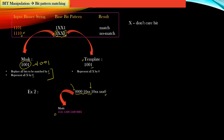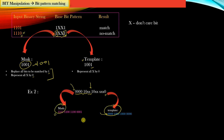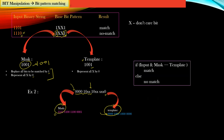Similarly, you can compute the template from this base bit pattern — the template is obtained by replacing all the don't-care bits by zero, as simple as that. So from a given base bit pattern, you need to compute two things: the mask and the template.